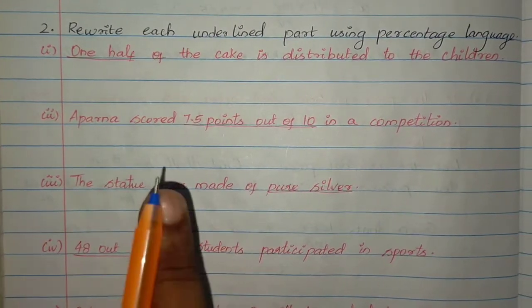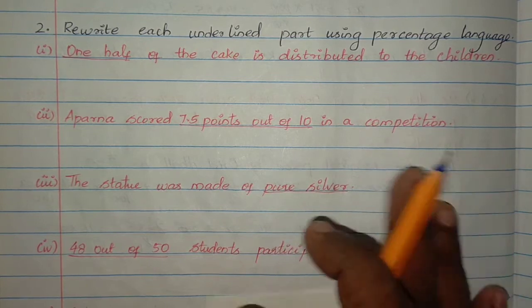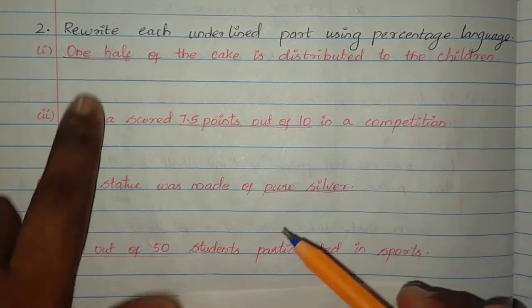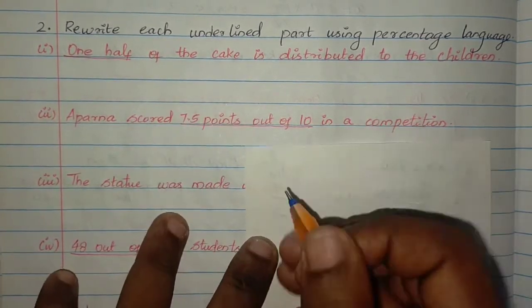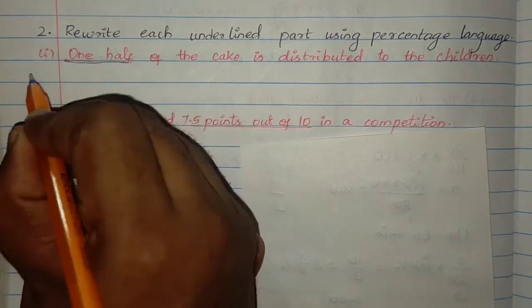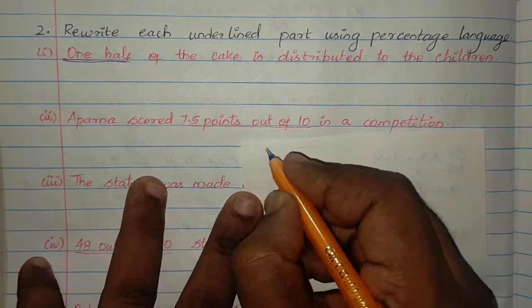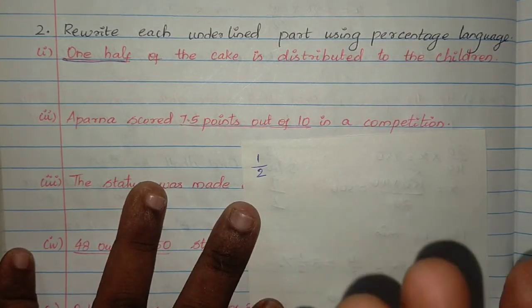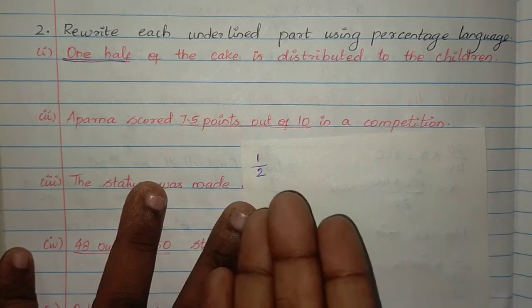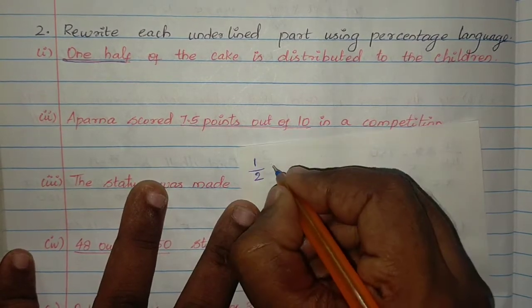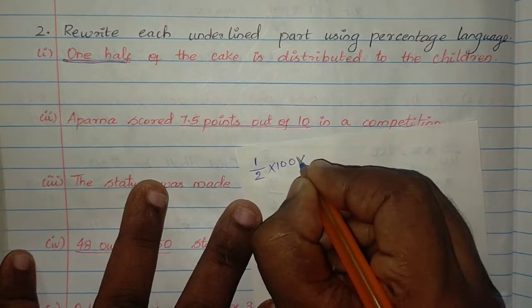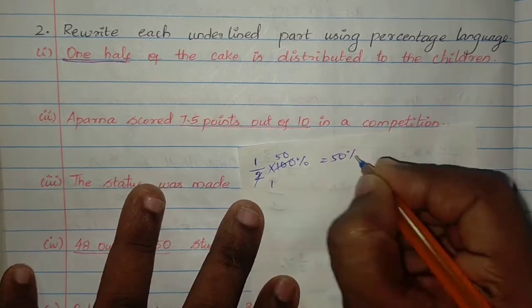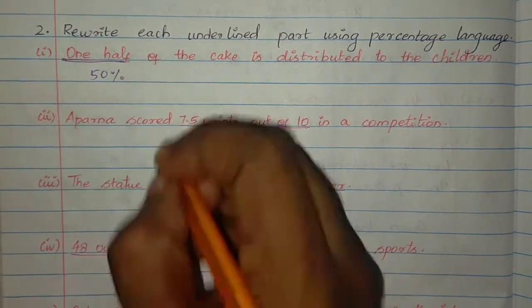Write each underlined part using percentage language. One half of a cake is distributed to the children. The underlined part is 1 half. 1 half into 100%: 2 parts equal 1 part, so 1 by 2 into 100 equals 50%. So 1 half equals 50%.